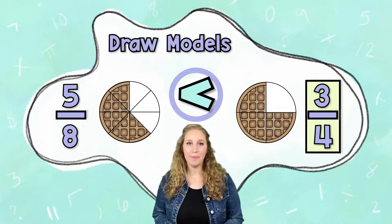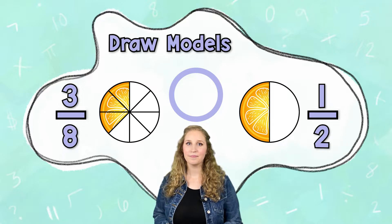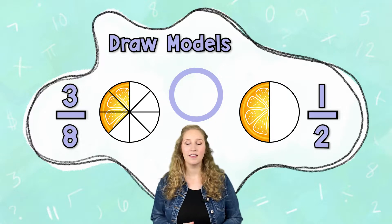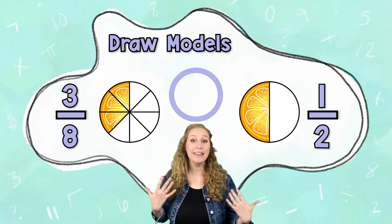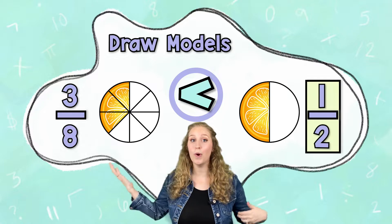All right, let's look at one more. 3 eighths or 1 half? Yeah, these actually have different denominators, but you can easily see with the visual which one is greater.